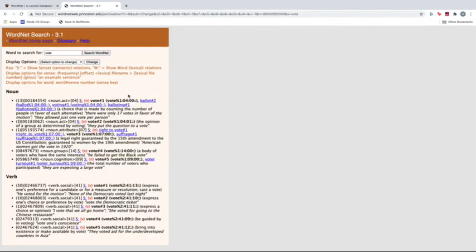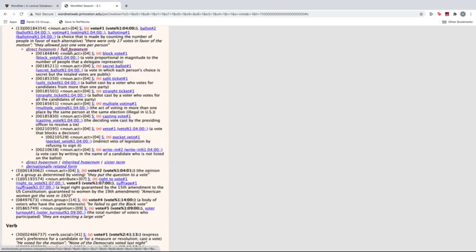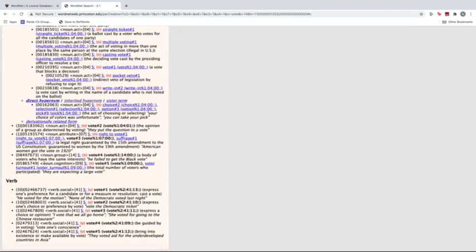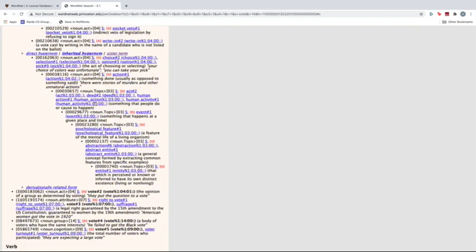If we want to see the hypernyms and hyponyms of one of these senses, we can click right here. And then, as you can see, we have links to the direct hypernym, the full hypernym which traces down to the most specific hypernym available, the direct hyponym, and the inherited hypernym which traces all the way up to the most general class.